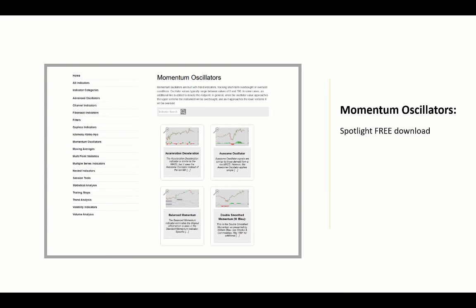With that, I'll wrap up this Indicator Spotlight and show you where to pick up your free download for the Stochastic Momentum Index — it will be in the momentum oscillator category. You can find other tools from William Blau there as well: the Double Smooth Momentum, the Double Smooth Stochastic, as well as the Awesome Oscillator, the No-Sure Thing, and the Balance of Momentum indicators, just to name a few. In total, we have about 145 indicators available for a one-time membership registration fee of $195 — that's for all of them, not each indicator.